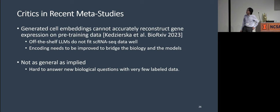And there are also other problems. For example, one study found that the cell embeddings generated by these foundation models cannot accurately reconstruct their gene expressions even on the pre-training data. That's the data they've seen. So this might mean that off-the-shelf LLMs do not fit the single-cell RNA-seq data we have. Or it might mean that the encodings I just introduced need to be improved to bridge the biology and these LLMs. And another concern is that these models are not as general as the name foundation model implied. Because it's very hard to use this model to answer new biological questions when we actually don't have or only have very few labeled data for those.